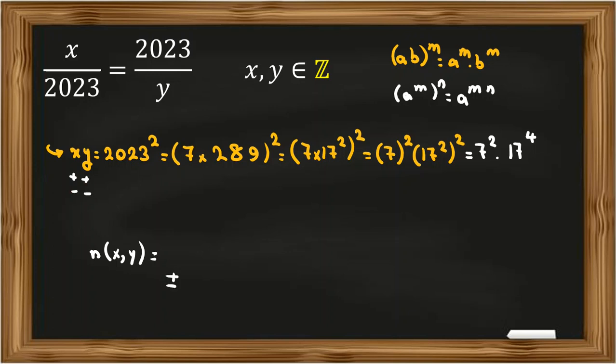Because the product is positive, considering sign we have two cases. For x, x can be 7 to the 0, 7 to the 1, 7 squared, so we have three cases. And for 17: 17 to the 0, 17 to the 1, 17 squared, 17 cubed, or 17 to the 4, so we have five cases. 2 times 3 is 6, times 5 is 30.